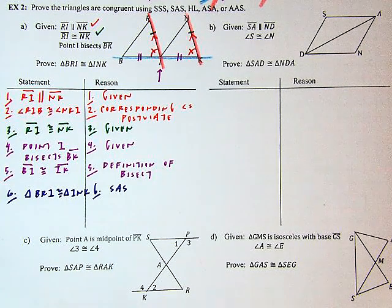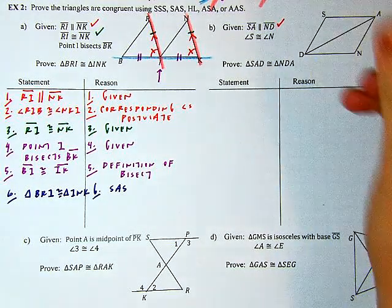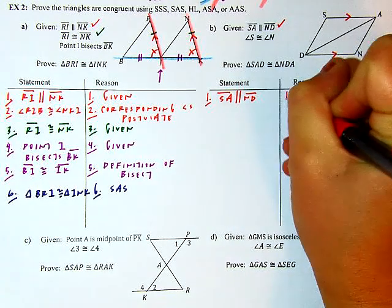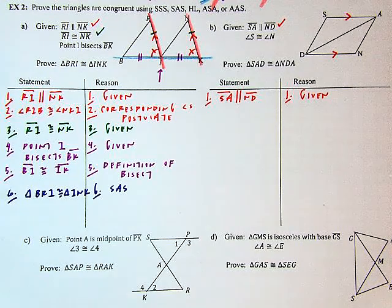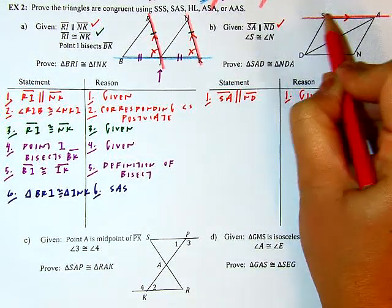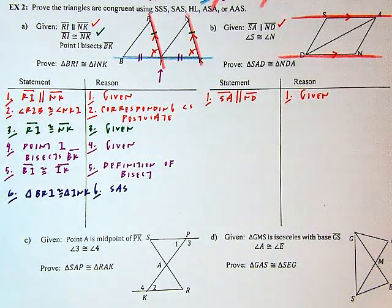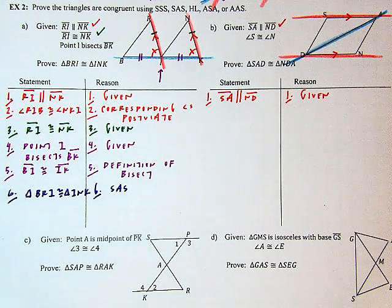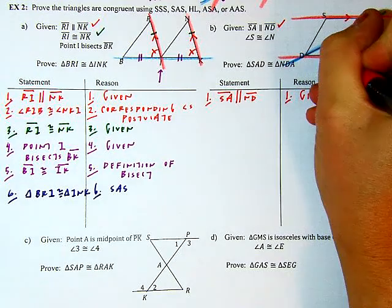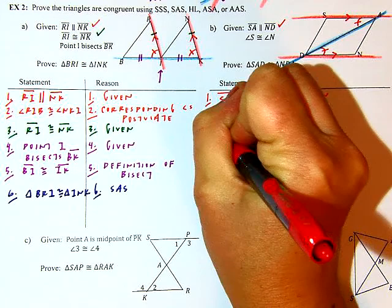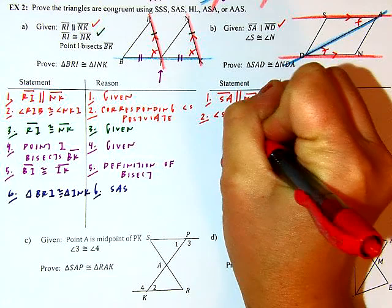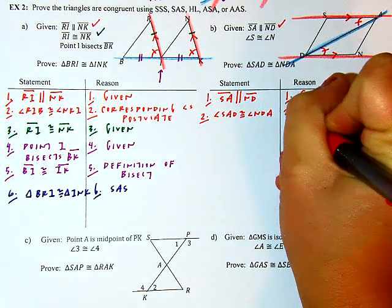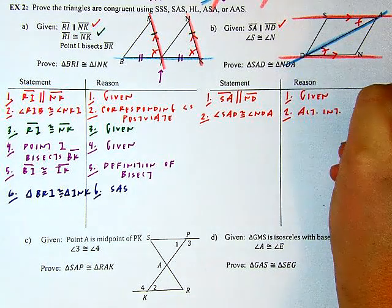Starting with the first given: SA runs parallel to ND. I'll take my colors and emphasize those parallel pathways in red, then elongate that diagonal and view it as my transversal. That builds me to this pair of alternate interior angles being congruent. If I name the first one SAD, it's congruent to NDA. My reason is the alternate interior angles theorem.